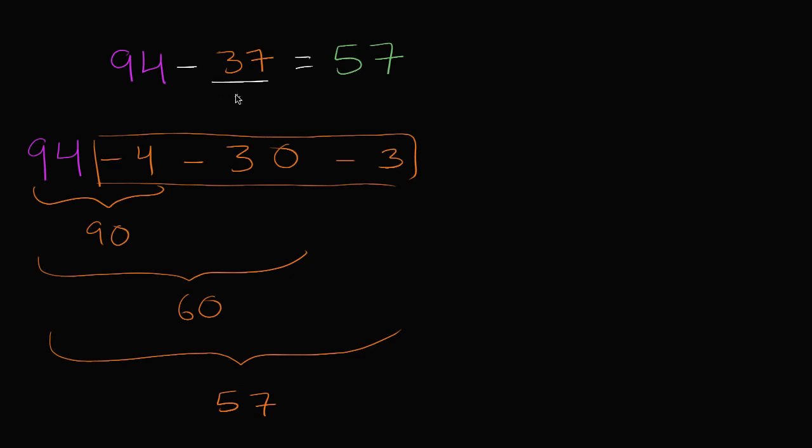Now another way you could have done it, you could have said, look, 37 is the difference between 94 and 57. So you could have thought about it. Well, if I start at 57, what do I have to add to get to 94?